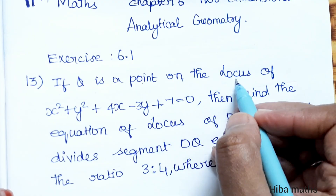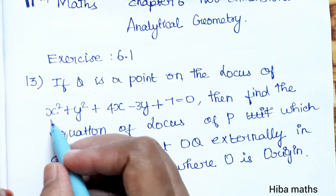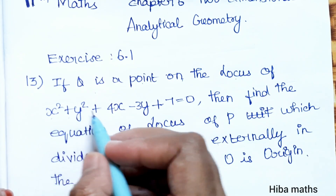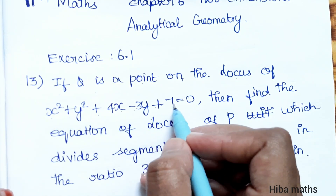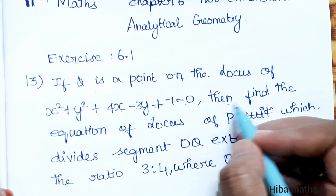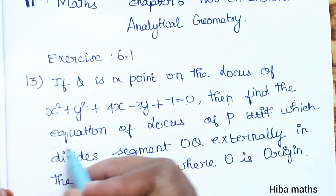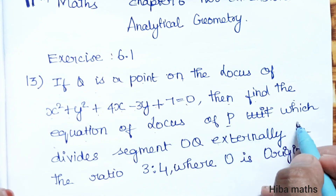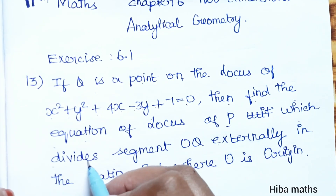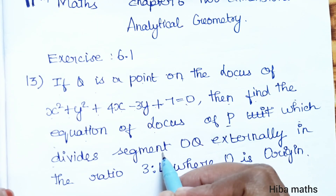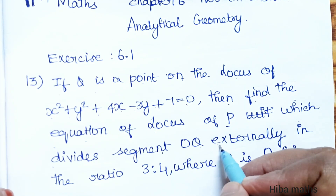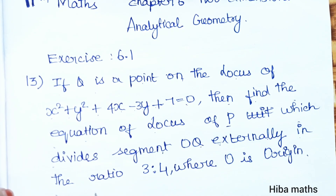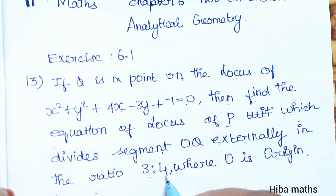If Q is the point on the locus of x² + y² + 4x - 3y + 7 = 0, then find the equation of locus of P, which divides the segment OQ externally in the ratio 3:4, where O is the origin.